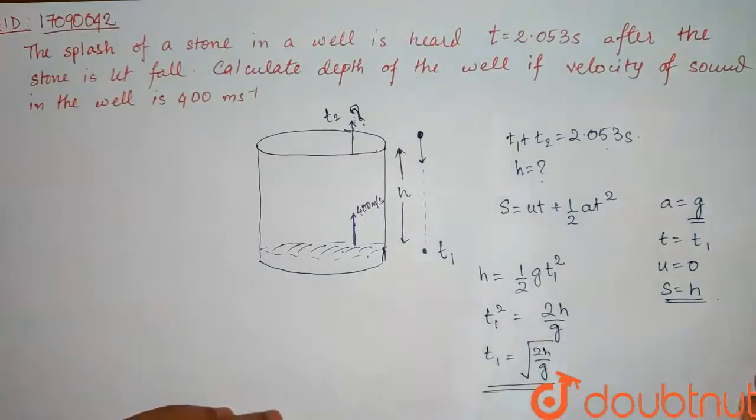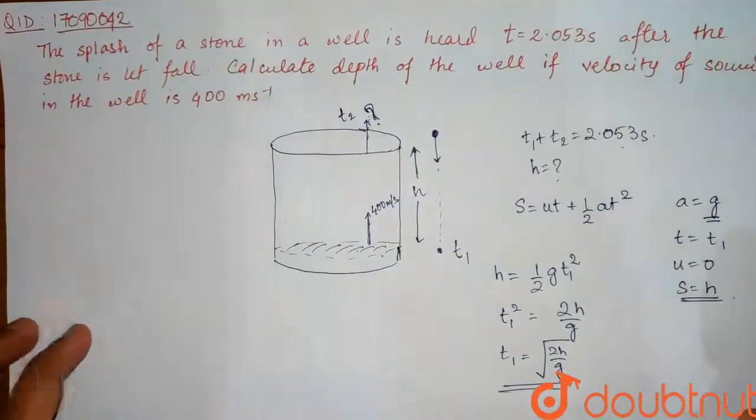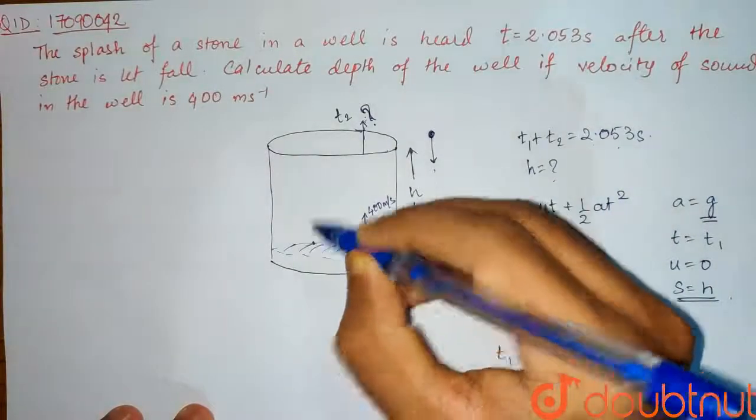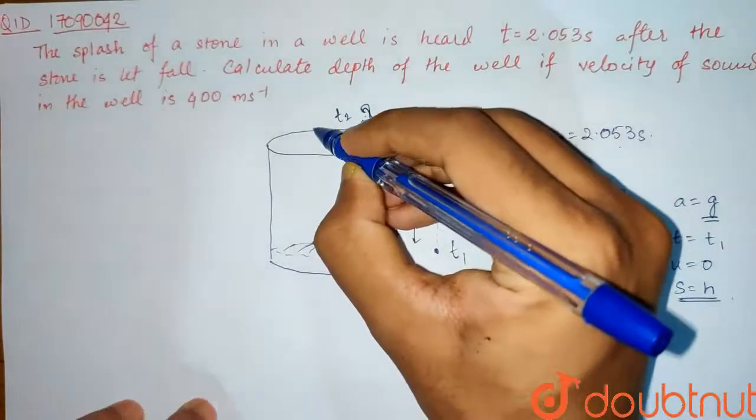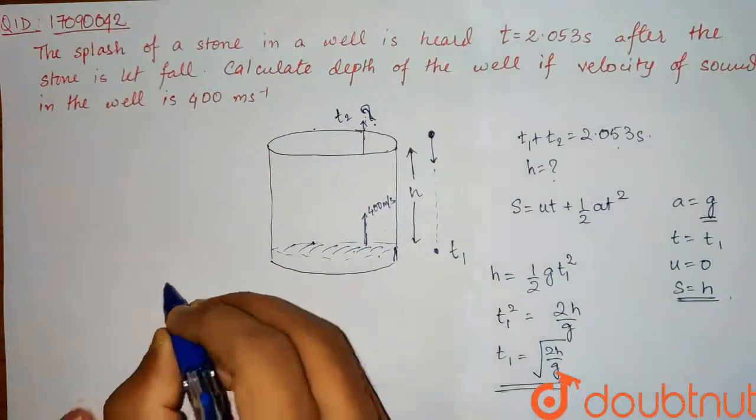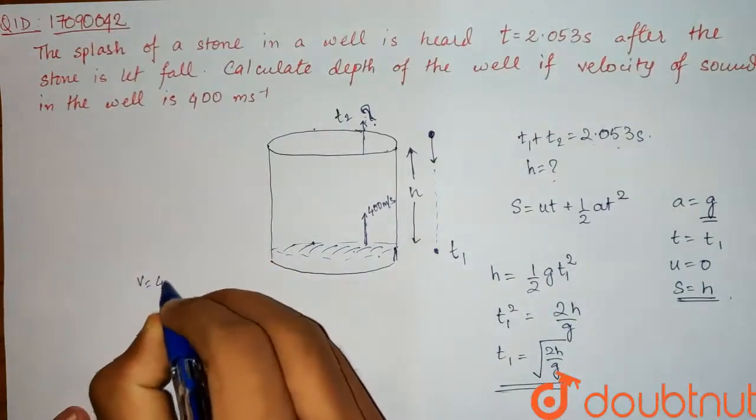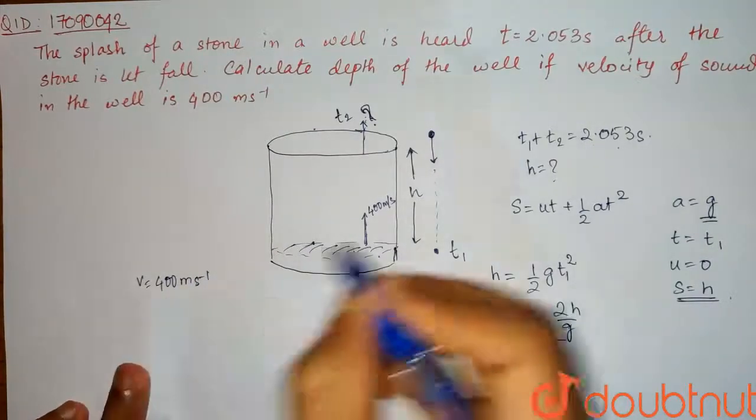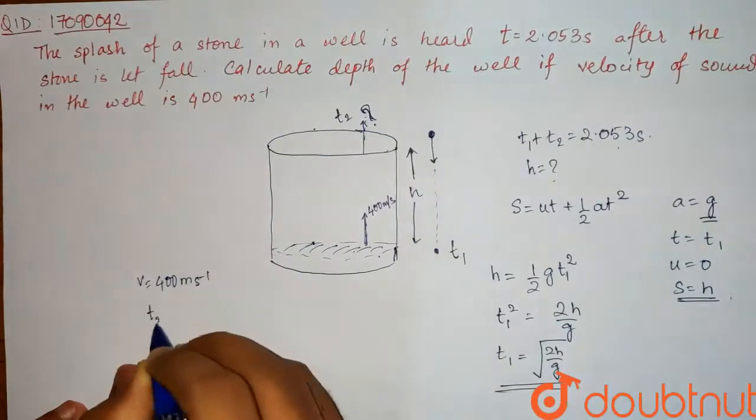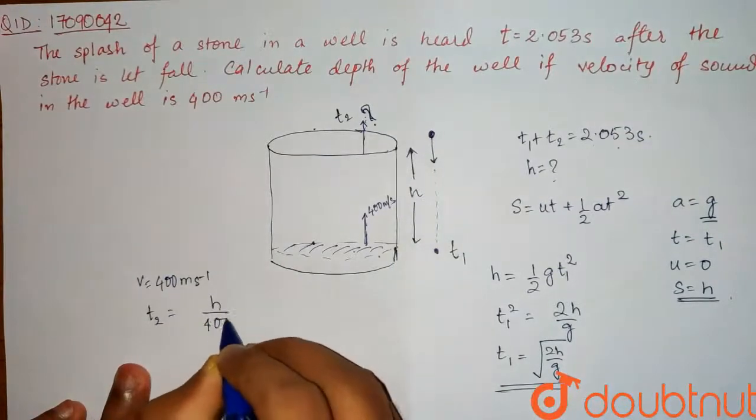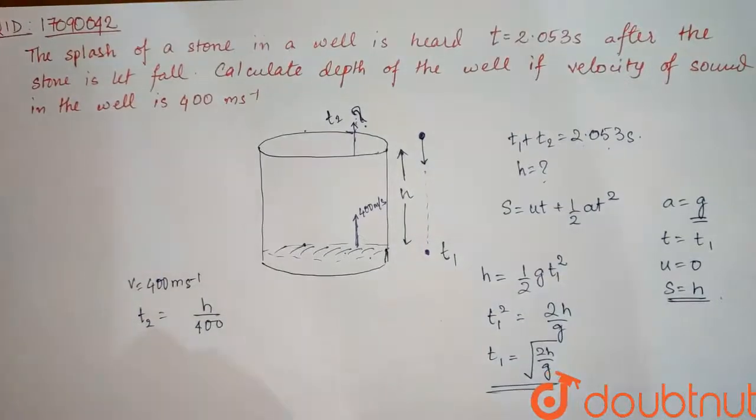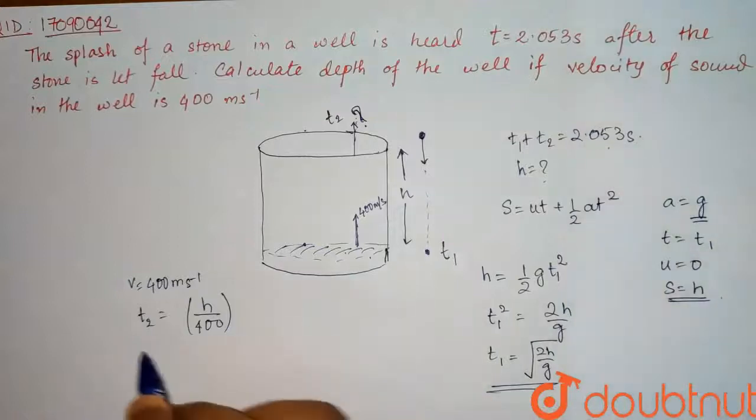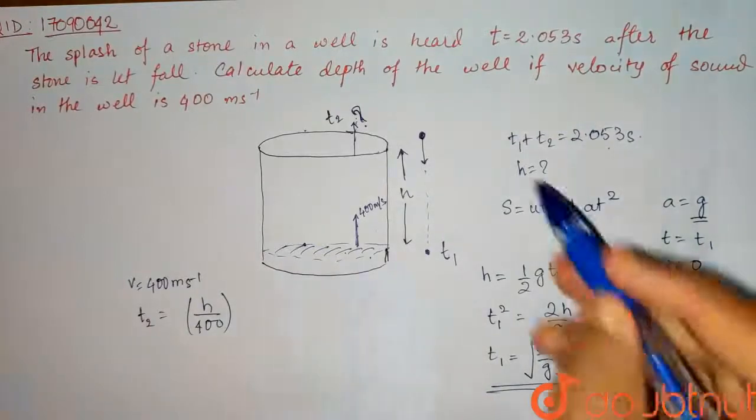Now how to make t2? For sound traveling, distance is H, velocity is 400 m/s, so t2 is H by 400. Now we don't have to do anything, just add t2 plus t1 and equate to 2.053.